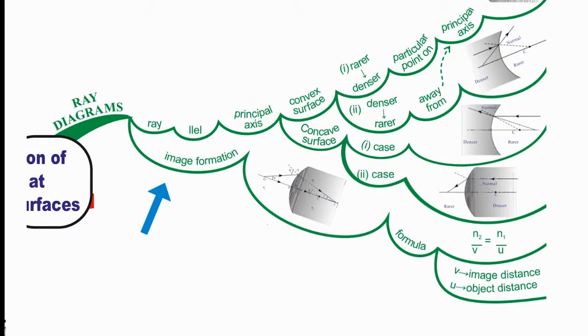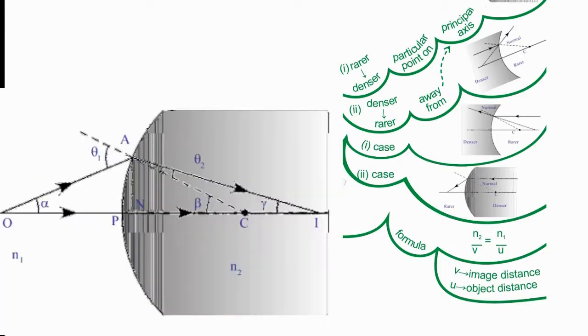Image Formation. You can see the image formation in the given figure. In the figure, O represents the object and I represents the image formed.